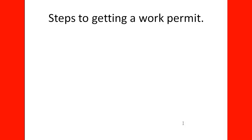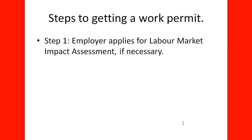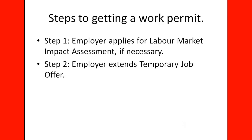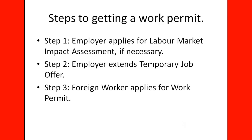What are the steps to getting a work permit? Step 1: the employer needs to apply for a Labor Market Impact Assessment (LMIA), if necessary. We will learn about the LMIA in a later lecture. Step 2: the employer needs to extend a temporary job offer to the foreign worker. Step 3: the foreign worker applies for the work permit, assuming the employer has already received a positive or neutral LMIA and has extended a temporary job offer that the foreign worker has accepted.